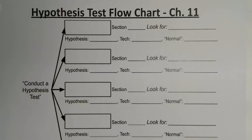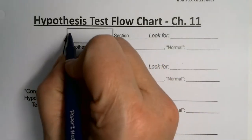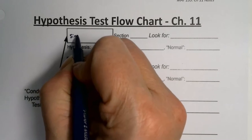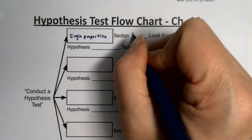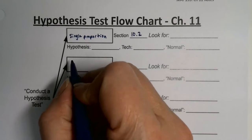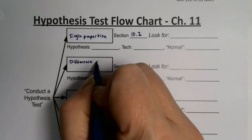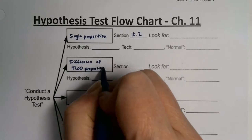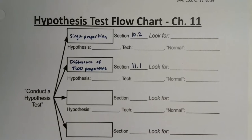I'm going to put the proportion ones together because they go nicely together. There's the single proportion test from section 10.2, and then the difference of two proportions — technically they're independent but we'll just assume that — from section 11.1.